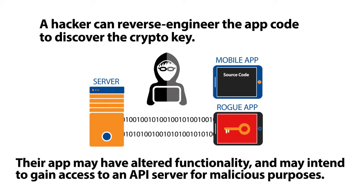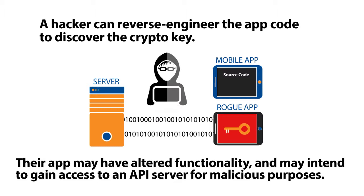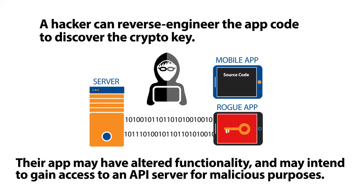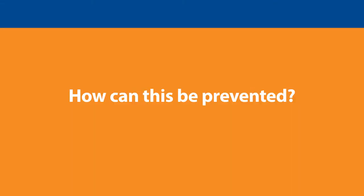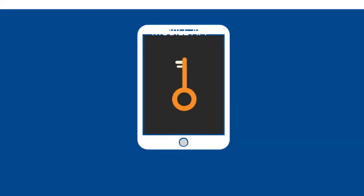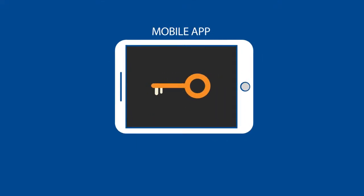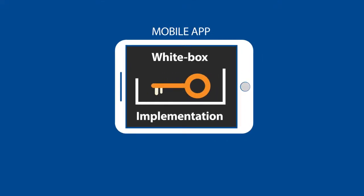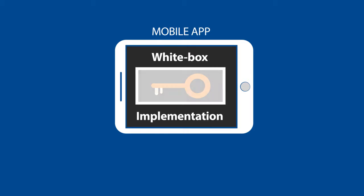Their app may have altered functionality and or may intend to gain access to an API server for malicious purposes. Using a white box cryptography solution, cryptographic keys can be securely hidden even if a hacker has full access to the client software.